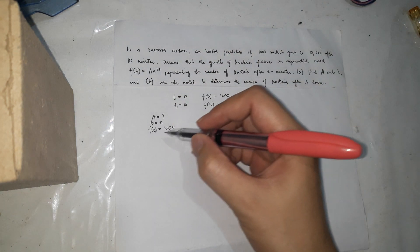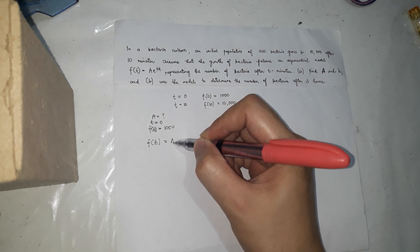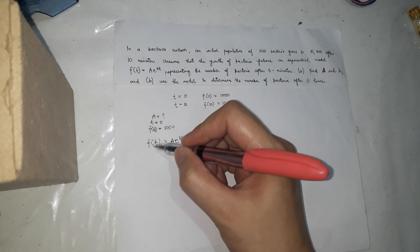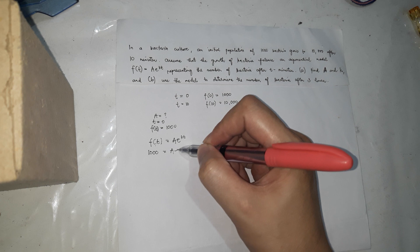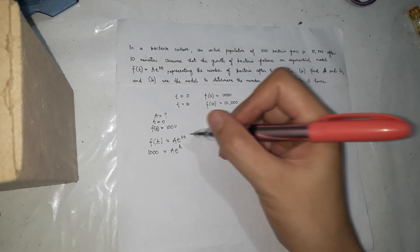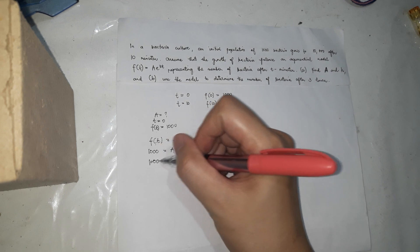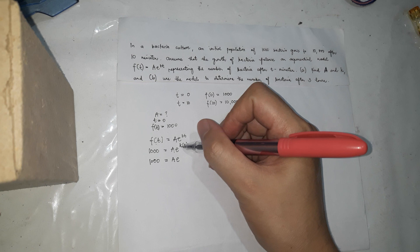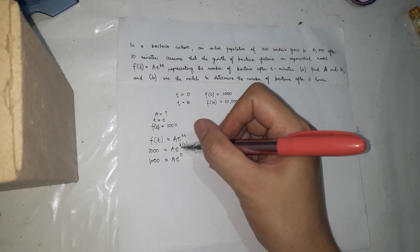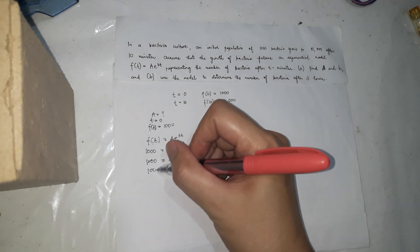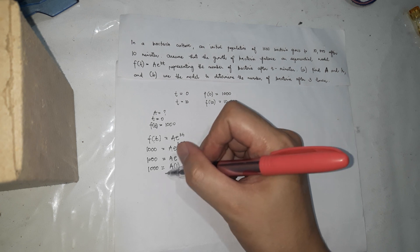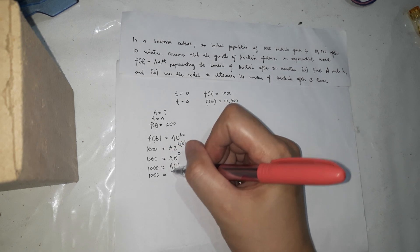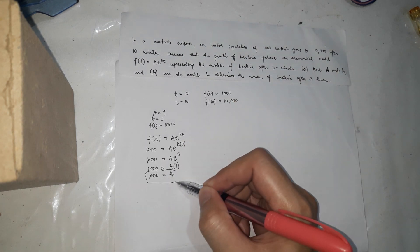That's the first given. So the formula, the exponential function is like this: f(t) equals 1,000, equals a times e to the power of k times t. We don't know k, so let it be. And the time is 0. How many minutes elapsed? So 1,000 equals a times e. Any number multiplied by 0 is 0. So k times 0 is 0, so e to the 0. So 1,000 equals a. Any number whose exponent is 0 is 1, so e to the 0 is 1. That means 1,000 equals a. We now have the value of a, which is 1,000.